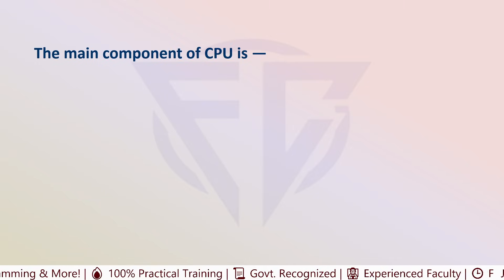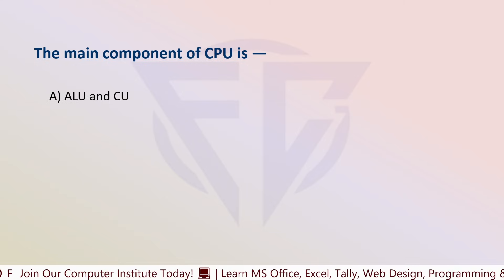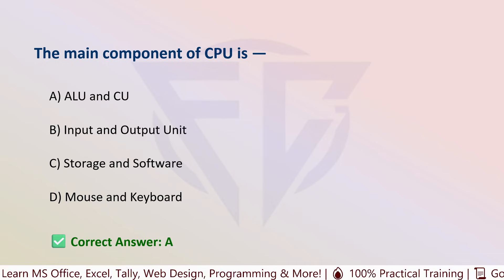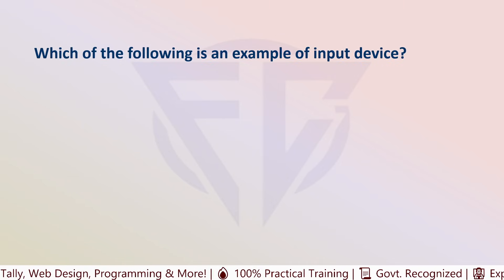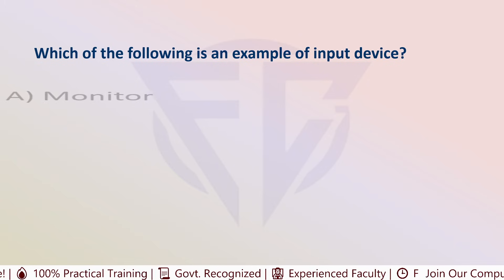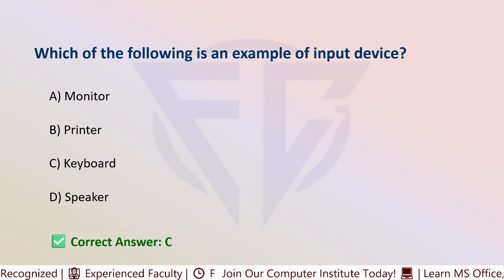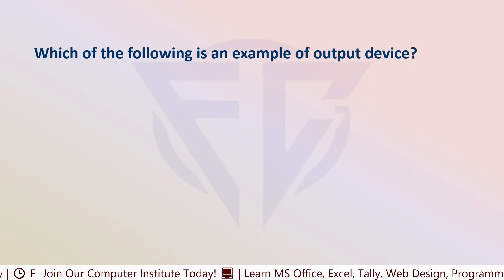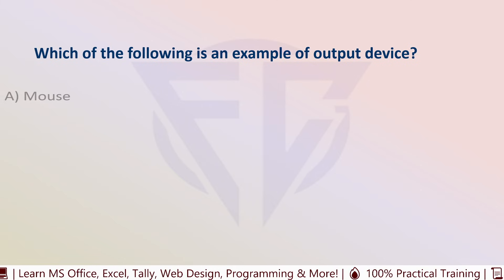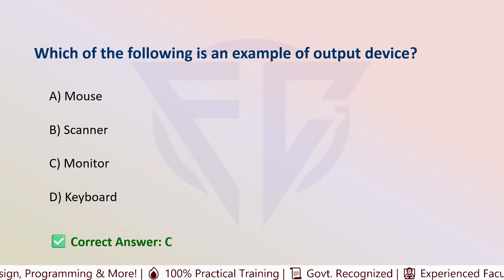The next question is: the main components of CPU are — options are: A) ALU and CU, B) Input and Output unit, C) Storage and Software, and D) Mouse and keyboard. The correct answer is A, ALU and CU. The next question: which of the following is an example of an input device? Options include Monitor, Printer, and Keyboard — the correct answer is Keyboard. The next question: which of the following is an example of an output device? Options are: A) Mouse, B) Scanner, C) Monitor, and D) Keyboard. The correct answer is C, that is monitor.